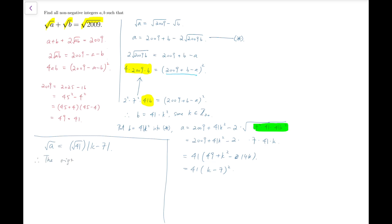So therefore, the original equation becomes √41 times |k minus 7| plus √41 times k equals 7√41. So that means the absolute value of (k minus 7) is actually equal to 7 minus k.